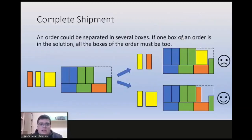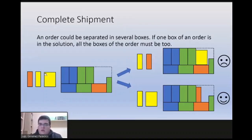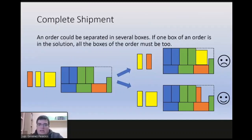This constraint makes a modification in the definition of the problem because now boxes are grouped in what we call orders or clients. If one box of an order is loaded in the container, then we must load all the boxes of that order. In this two-dimensional example, on top we have the logical state if we only want to minimize empty space — we take the bigger box — but with the complete shipment constraint, what we want first is to complete the orders, so the correct step is to introduce the orange box to complete the order, as each color represents another order.